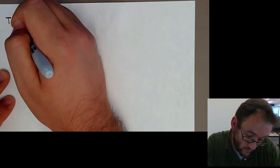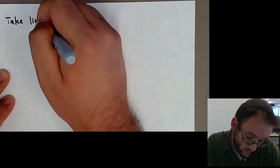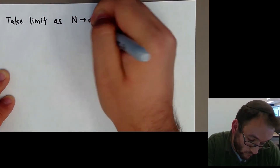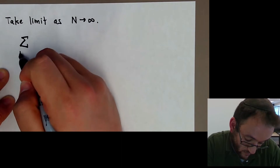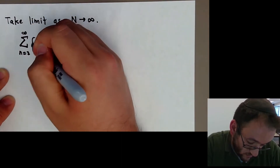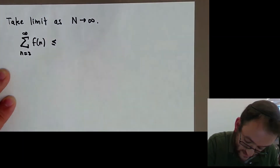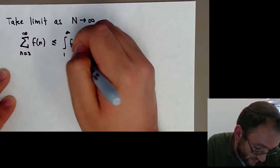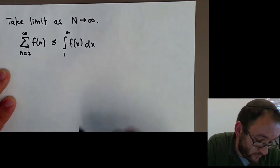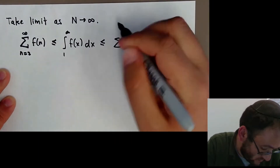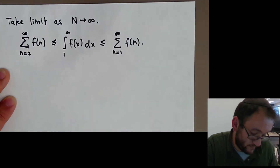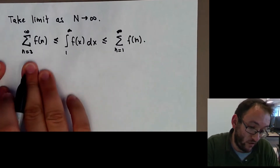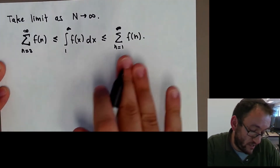If we take the limit as n goes to infinity, then the green rectangles become the sum from n equals 2 to infinity of f of n, which is less than or equal to the integral from 1 to infinity of f of x dx, and that is less than or equal to the sum from n equals 1 to infinity of f of n. So our integral is below one version of our summation and above the other version.